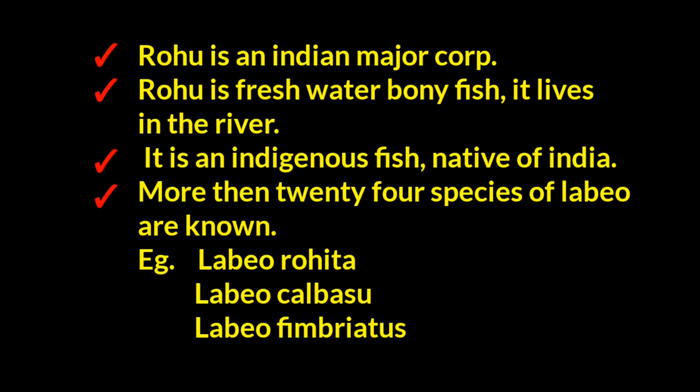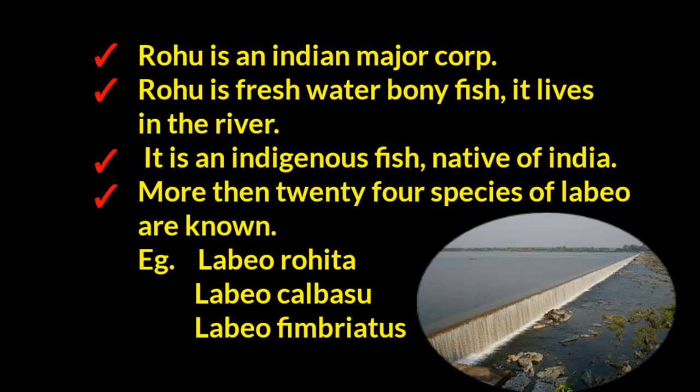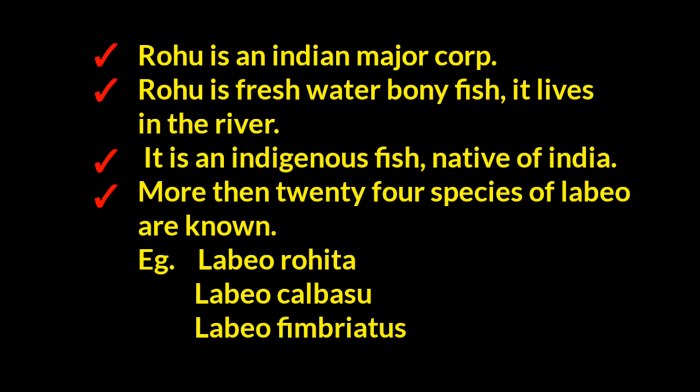Rohu is an Indian major carp. Rohu is a freshwater bony fish. It lives in the river. It is an indigenous fish native of India. More than 24 species of Labio are known.